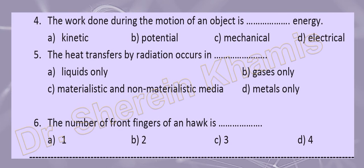Question number four says: work done during the motion of an object. We said we have two kinds: energy stored inside the body is called potential energy, and when the body moves or does work to make motion, we call it kinetic energy. The sum of kinetic and potential energies we call mechanical energy — the law of conservation of energy.